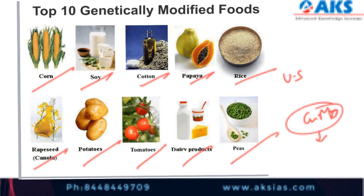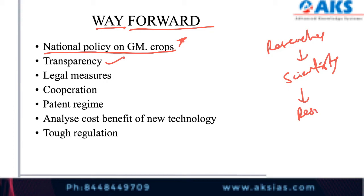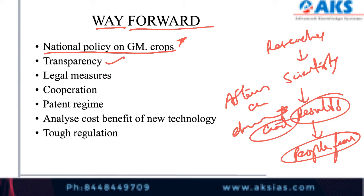So what is the way forward? First, create a clear policy on genetically modified crops. Then develop transparency — researchers and scientists should make their results public so that people's fears can be reduced, and if a crop is potentially beneficial, we can use it; if there are harmful aftermath effects, we can eliminate them.